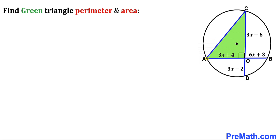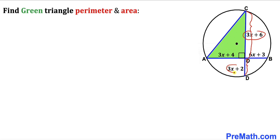Moreover, this segment AO is represented by 3x plus 4. This segment OB is represented by 6x plus 3, whereas this segment CO is 3x plus 6, and finally this OD is represented by 3x plus 2. Our task is to calculate the perimeter and the area of this green triangle AOC.